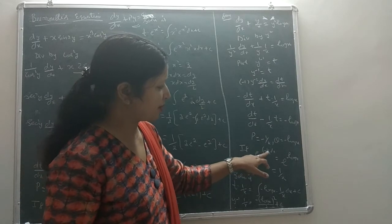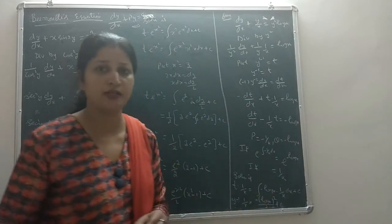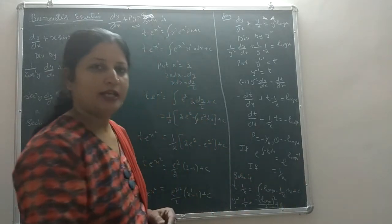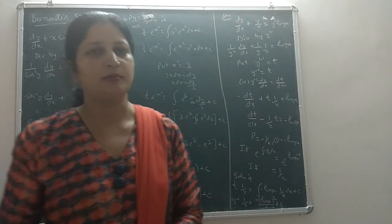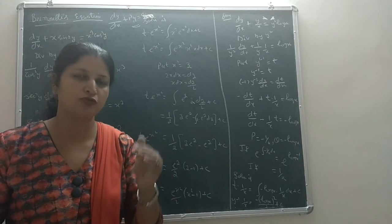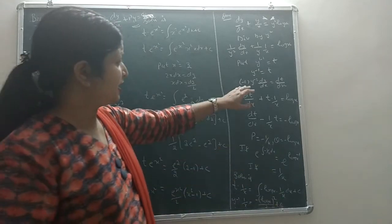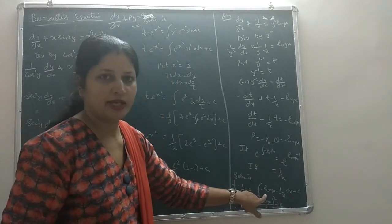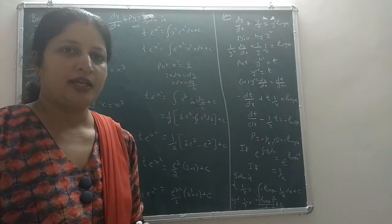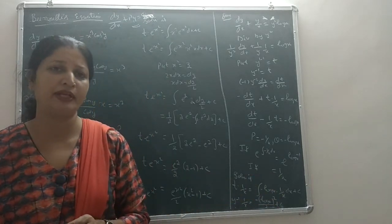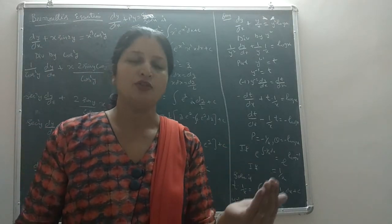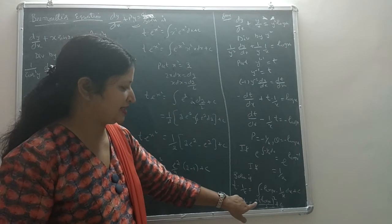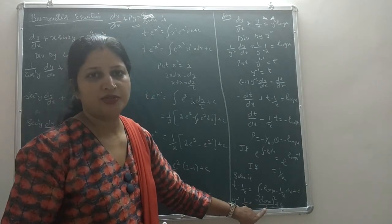The integrating factor is e raised to the power of integral of P dx, which is e^(integral of minus 1/x dx) = e^(minus log x) = 1/x. The solution is t·(1/x) equals the integral of minus log(x)·(1/x) dx plus C. Since the derivative of log(x) is 1/x, the integral becomes minus (log x)²/2.